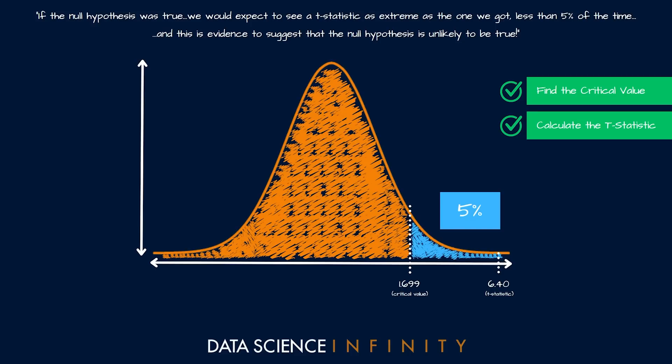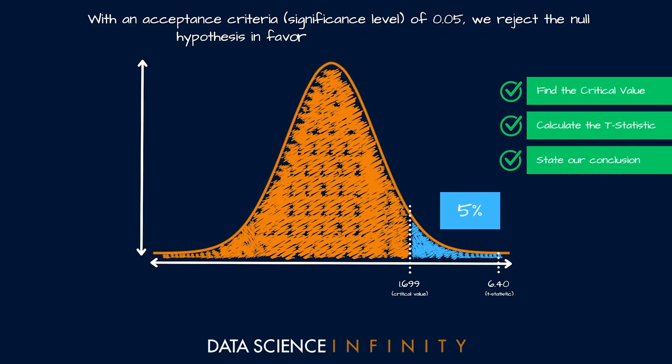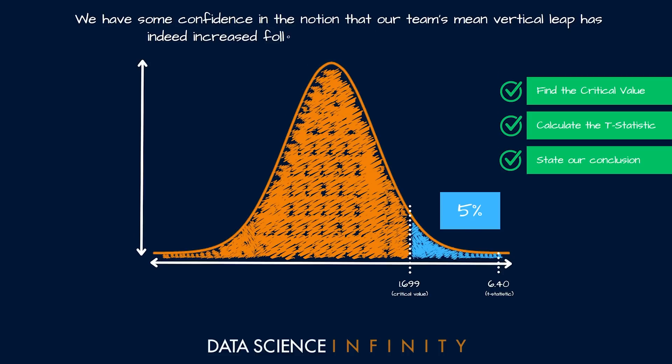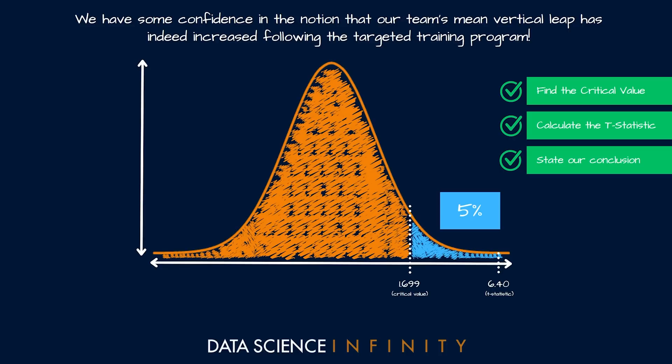So formally, based on all of this, we will reject the null hypothesis and we would say with an acceptance criteria or significance level of 0.05 we reject the null hypothesis in favor of the alternate hypothesis, which essentially translates to we have some confidence in the notion that our team's mean vertical leap has indeed increased following the targeted training program.